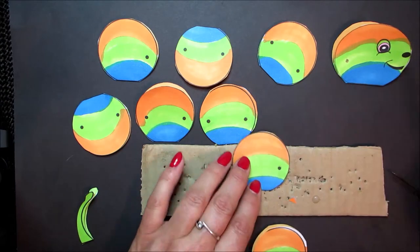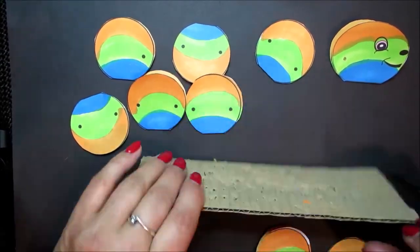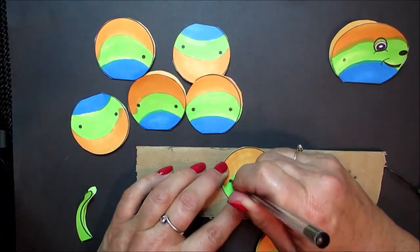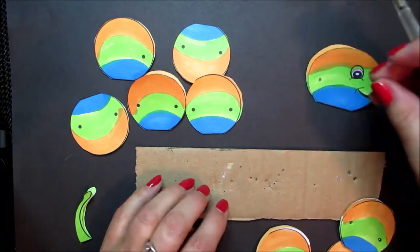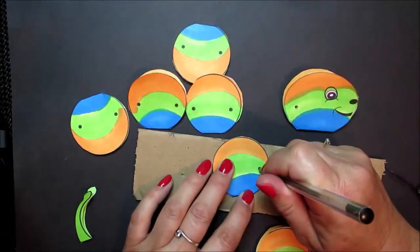So carry on doing this to all the body parts. So two holes in every body part. And then one hole in the head and one hole in the tail part.